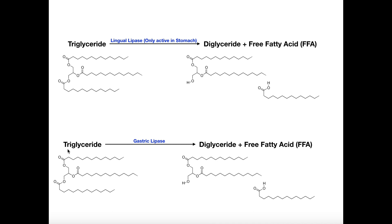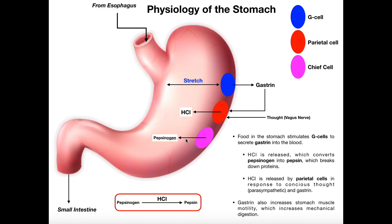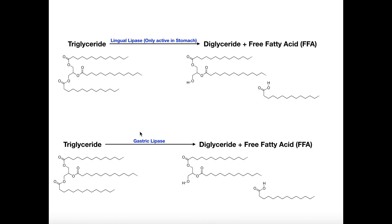We want to hydrolyze off all of the fatty acids — there are three per triglyceride — so gastric lipase is going to play a role in that. Gastric lipase being active in the stomach implies that it is activated by low pH. Once gastric lipase is squirted into the small intestine with the rest of the chyme, it will be inactivated. But in the stomach, it breaks down triglycerides into free fatty acids.